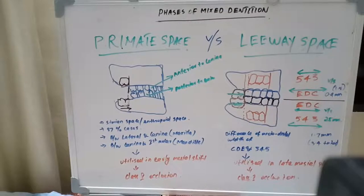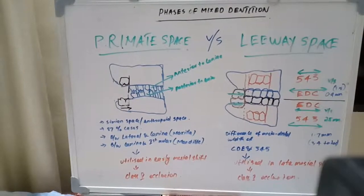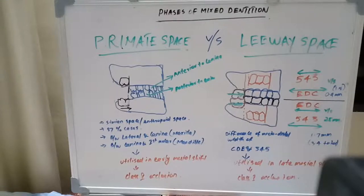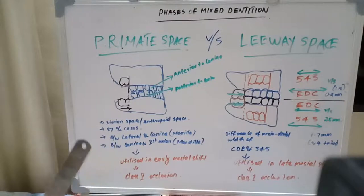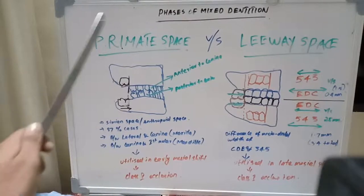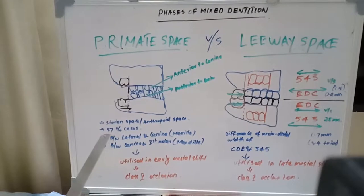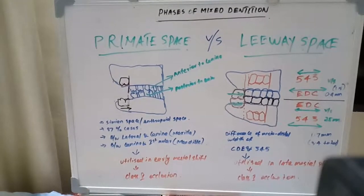Primate space and leeway space refer to the space available which is utilized by the permanent molars to accommodate to their final position. Primate space is also known as simian space or anthropoid space, and it is present in approximately 87% of cases.